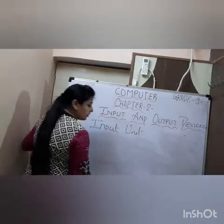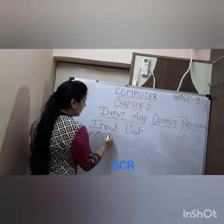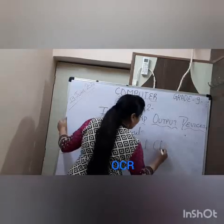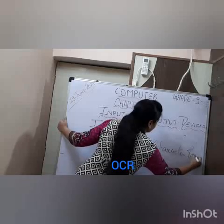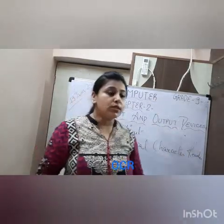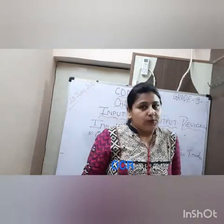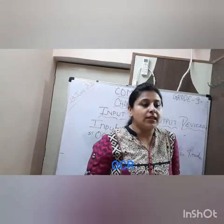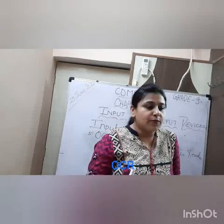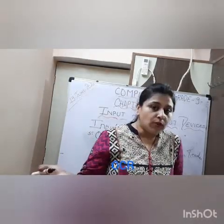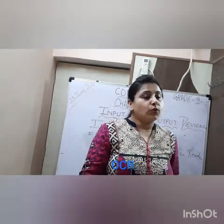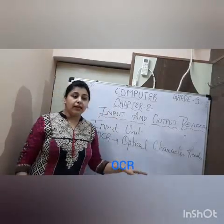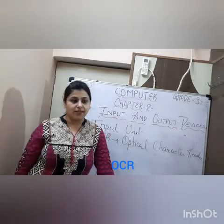The next input device is OCR — Optical Character Reader or Optical Character Recognition. It is used to read characters from printed paper into a computer. The character shape is recognized by OCR through a light source in conjunction with photoelectric cells. When a text page is scanned, it is converted into computer-readable form, and the software places the text into a document that can be edited using any word processor.